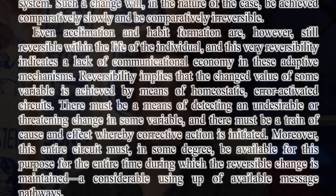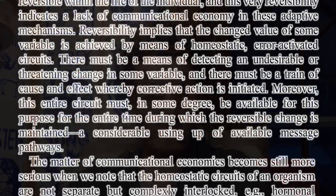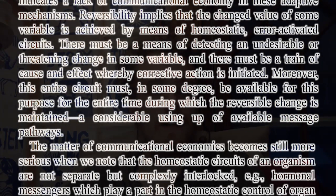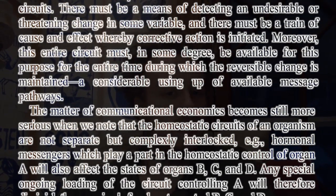Even acclimation and habit formation are, however, still reversible within the life of the individual, and this very reversibility indicates a lack of communicational economy in these adaptive mechanisms. Reversibility implies that the changed value of some variable is achieved by means of homeostatic, error-activated circuits. There must be a means of detecting an undesirable or threatening change in some variable, and there must be a train of cause and effect whereby corrective action is initiated. Moreover, this entire circuit must, in some degree, be available for this purpose for the entire time during which the reversible change is maintained — a considerable using up of available message pathways.